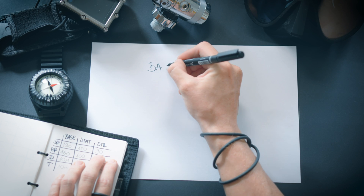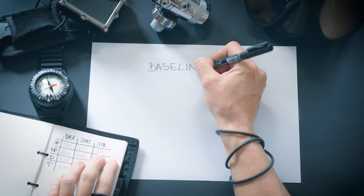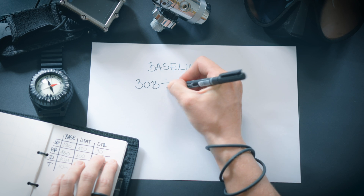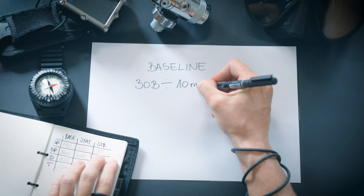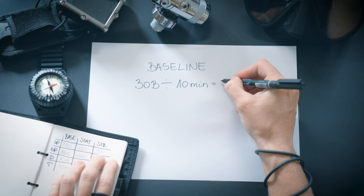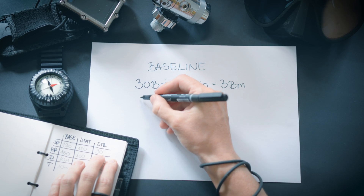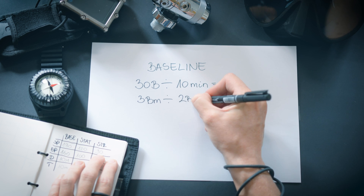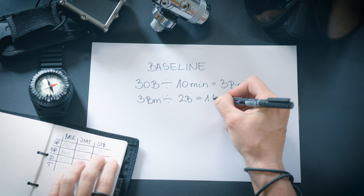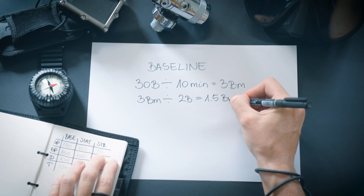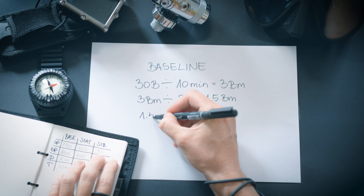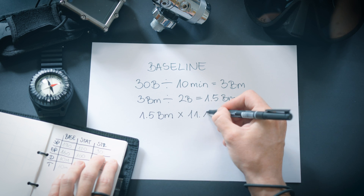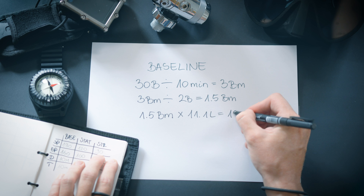Let's have a look at the calculations based on our recorded data, starting with the baseline SAC rate. The bar used amounted to 30 bars; when divided by the duration of 10 minutes, this yields an air consumption rate of 3 bars per minute at the given depth. Divide this value by the absolute pressure at depth, which was 2 bars, resulting in a surface air consumption rate of 1.5 bars per minute. Multiply this figure by the cylinder capacity of 11.1 liters, giving a respiratory minute volume of 16.65 liters per minute.